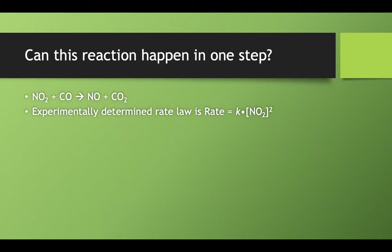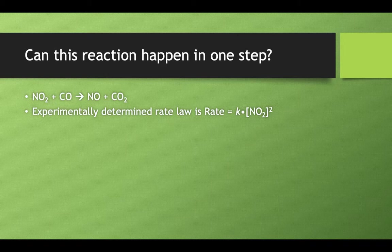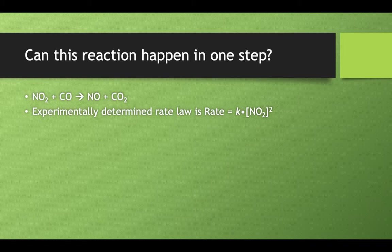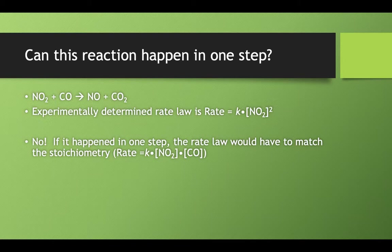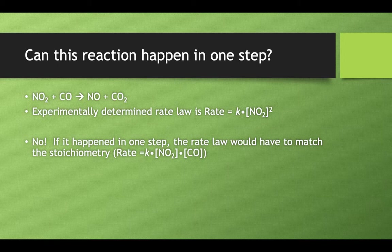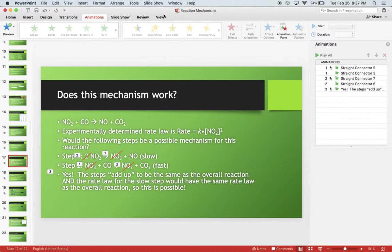If this reaction happened in a single step, NO2 plus CO makes NO and CO2, and if I told you the rate law that we've determined experimentally is K times NO2 squared, does that work? No, just like the previous example. If it happened in one step, the rate law overall would have to match the stoichiometry of that supposed single step. The rate law for that reaction, if it were to occur in one step, would have to be NO2 times carbon monoxide. And it tells us that that's not the rate law. So it can't happen in a single step.